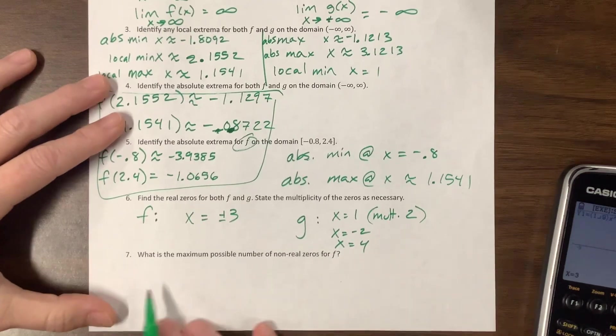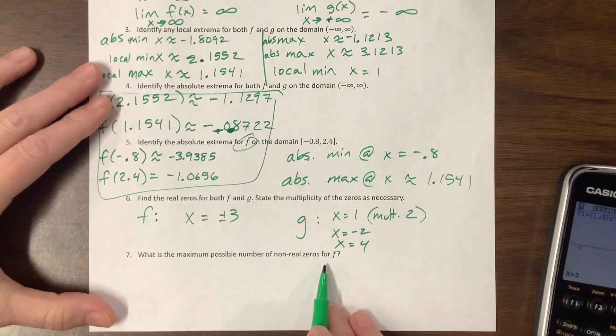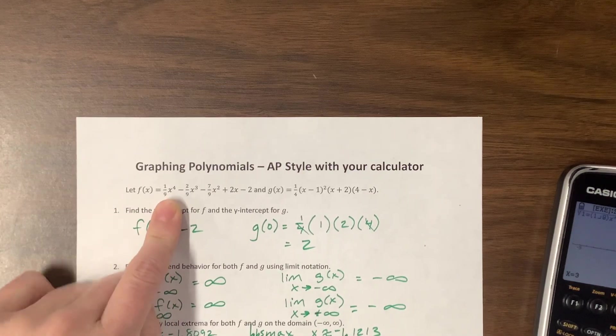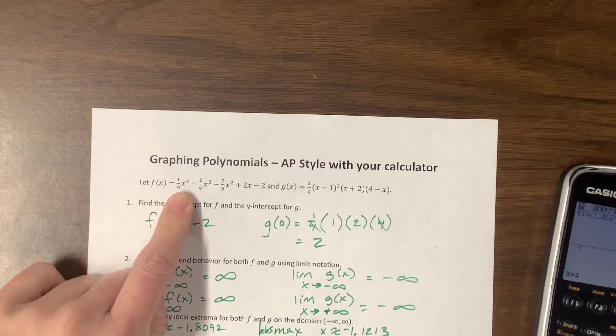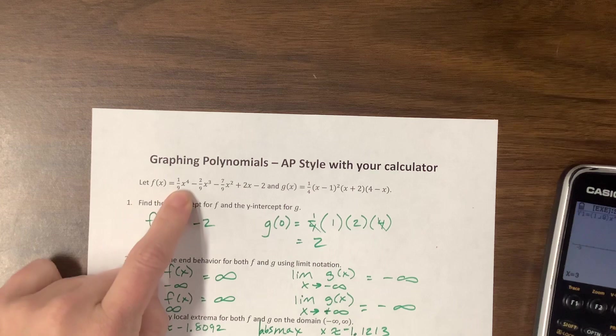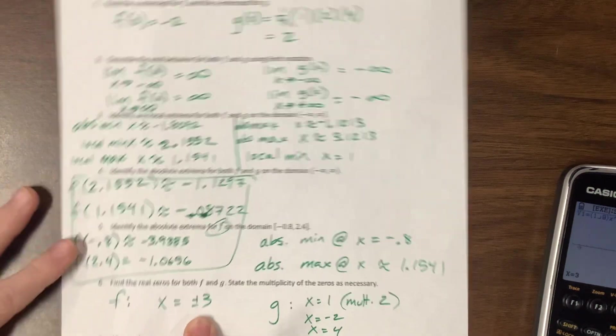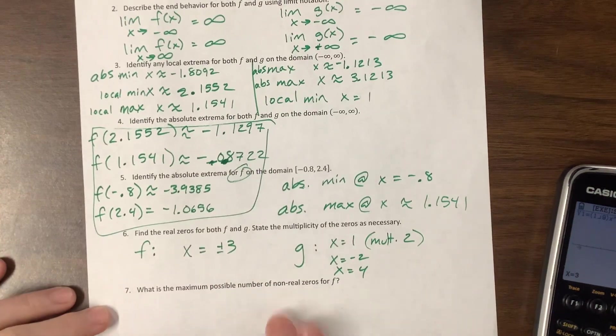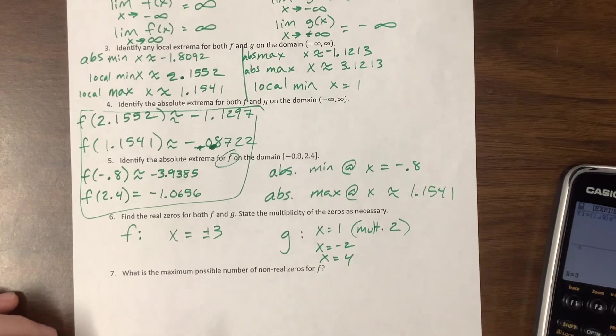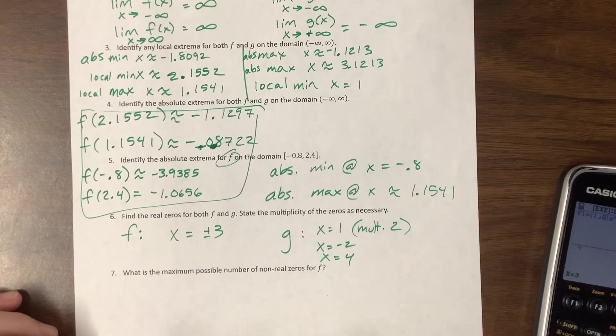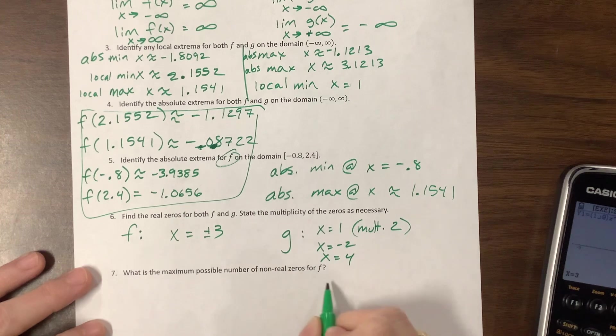So then the last question is, what's the maximum possible number of non-real zeros for f? Well, what happens here is that f is to the fourth power. So we would expect f to have four solutions. Well, we found two of them. And so at most, it can have two non-real. So it would have two real and two non-real, giving us a total of four zeros. So the maximum possible number of non-real zeros for f is two non-reals.